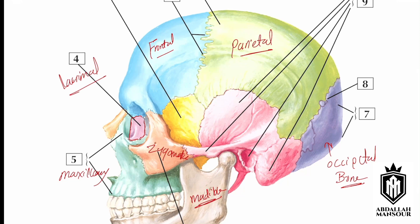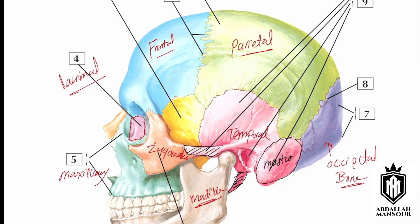The temporal bone has multiple processes. One of these processes is the zygomatic process, the styloid process, and also the mastoid process. So you have mastoid, styloid, and zygomatic process — because it connects to the zygomatic bone.